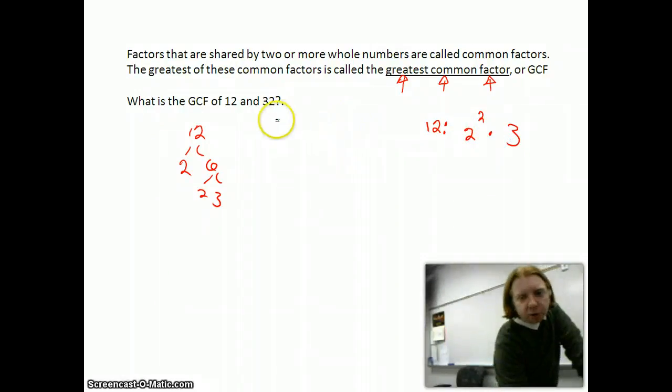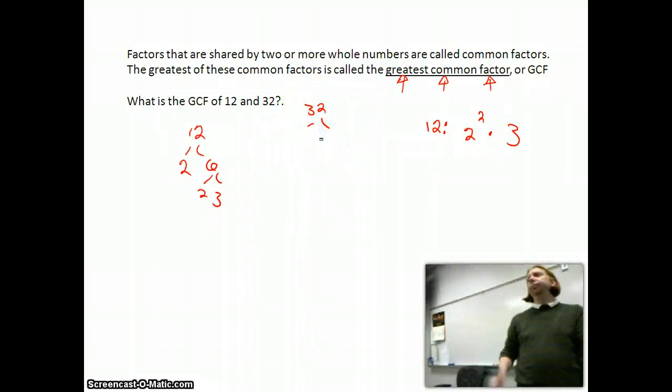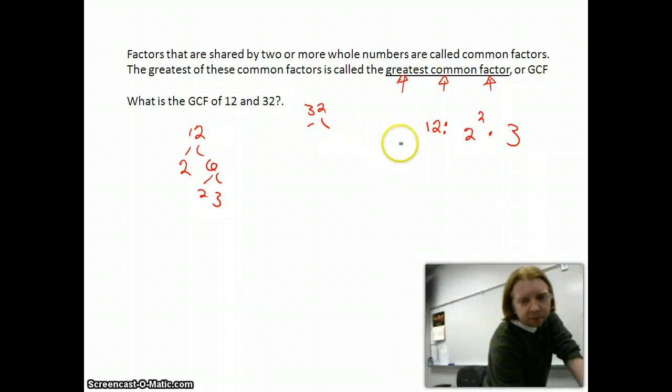Now let's see, 32, what is it? 8 times 4. You could do 4 times 8, it doesn't really matter. 4 is 2 times 2. Let's come over here to 8. 8 is 4 times 2, and 4 we just said was 2 times 2.